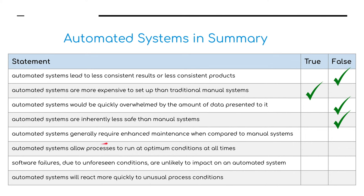Automated systems generally require enhanced maintenance compared to manual systems — true. Automated systems allow processes to run at optimum conditions all the time — true. Software failures due to unforeseen conditions are likely to impact on an automated system — false. Automated systems will react more quickly to unusual processes — true.